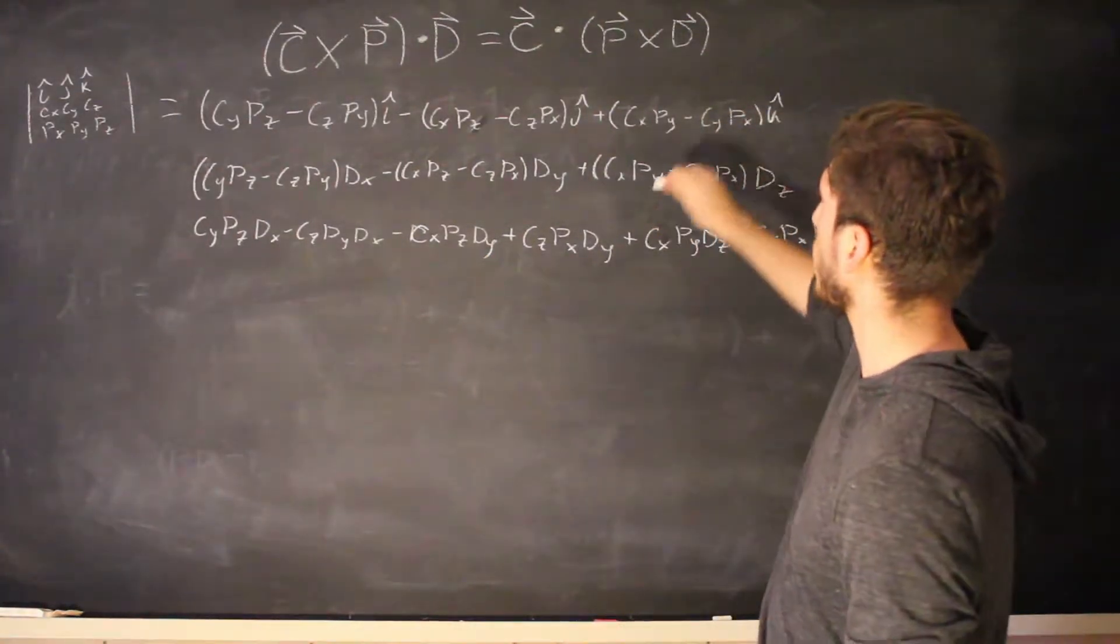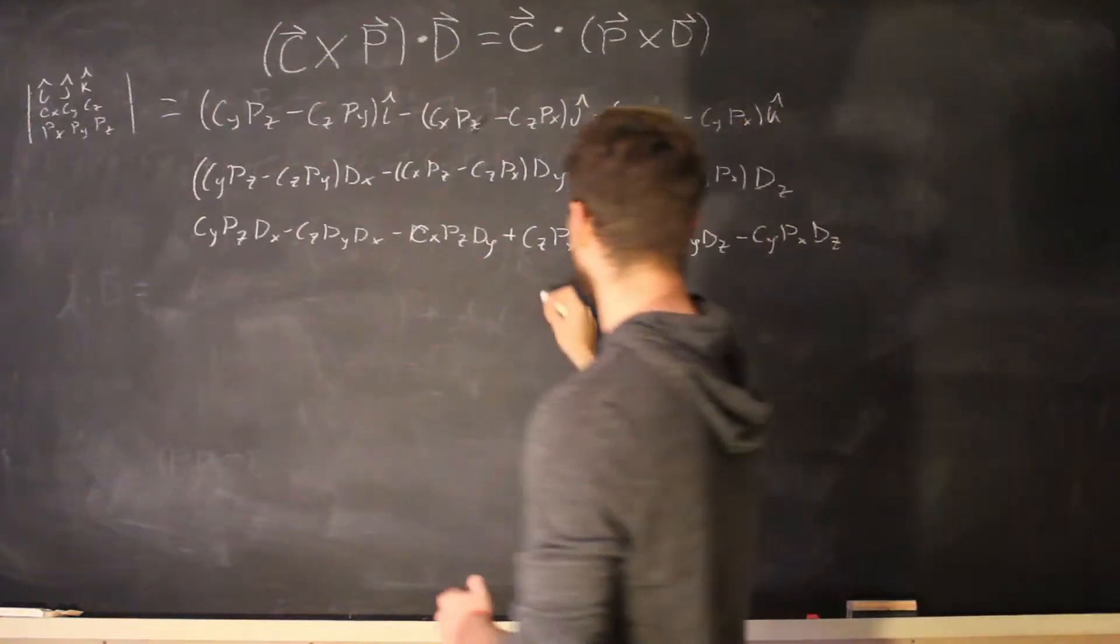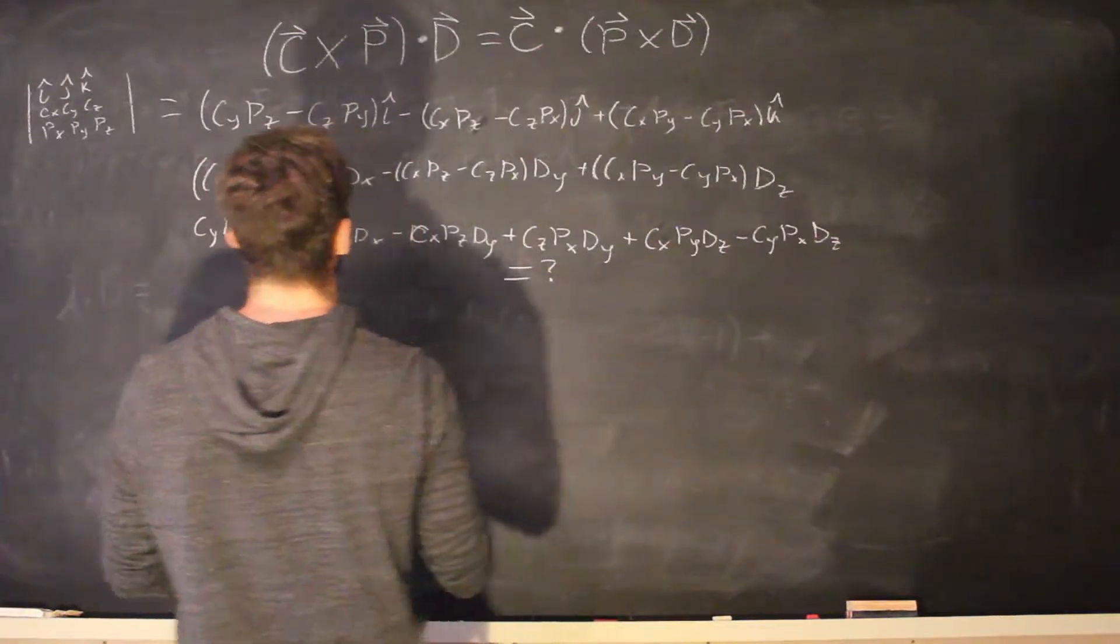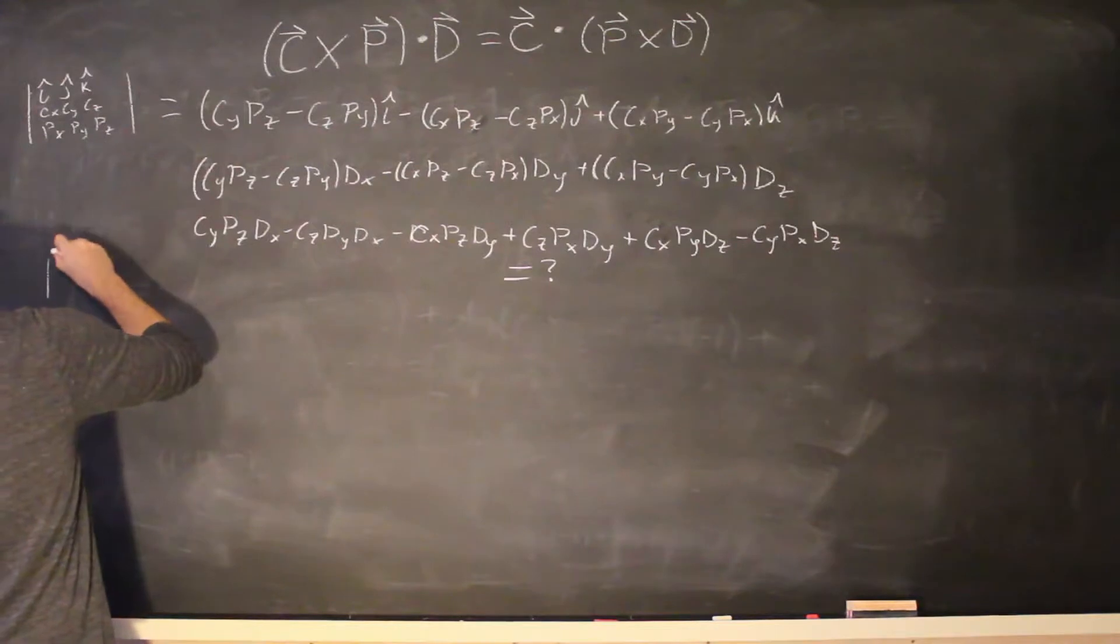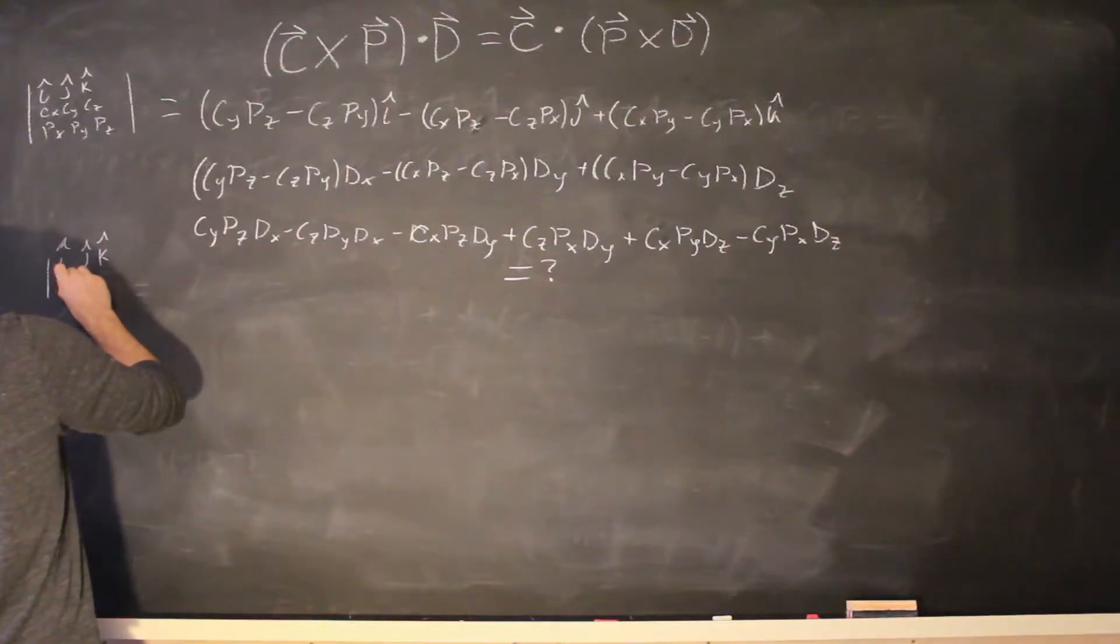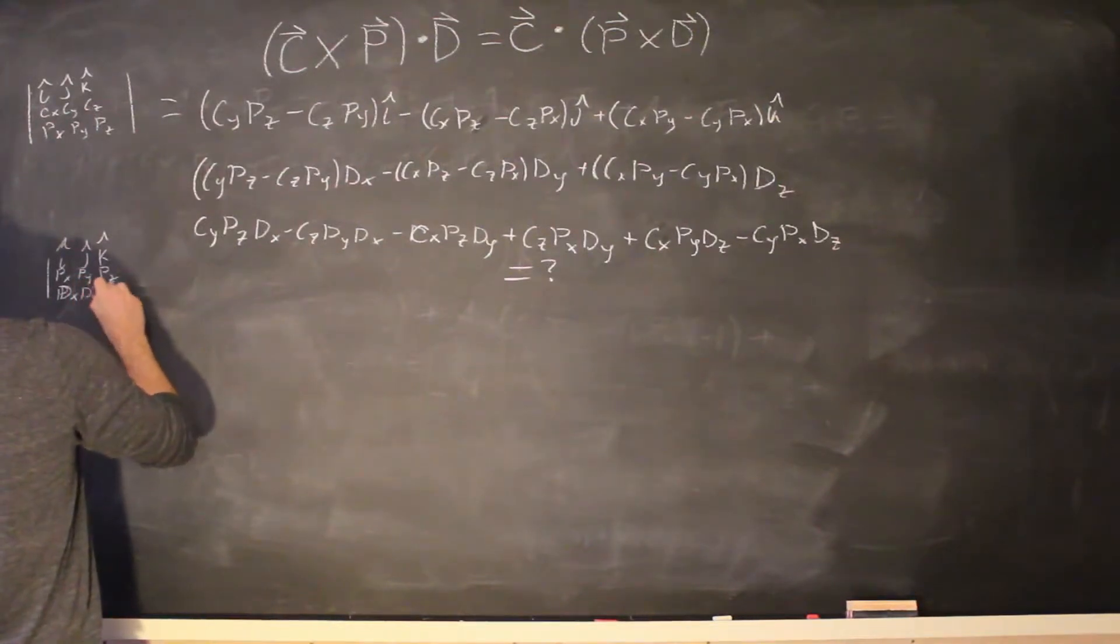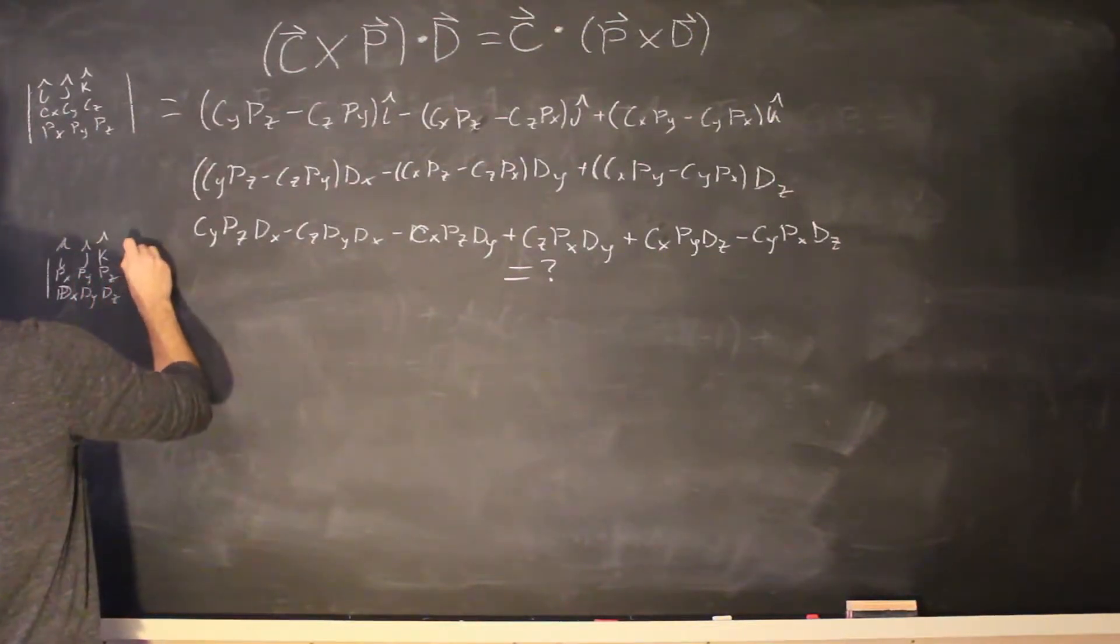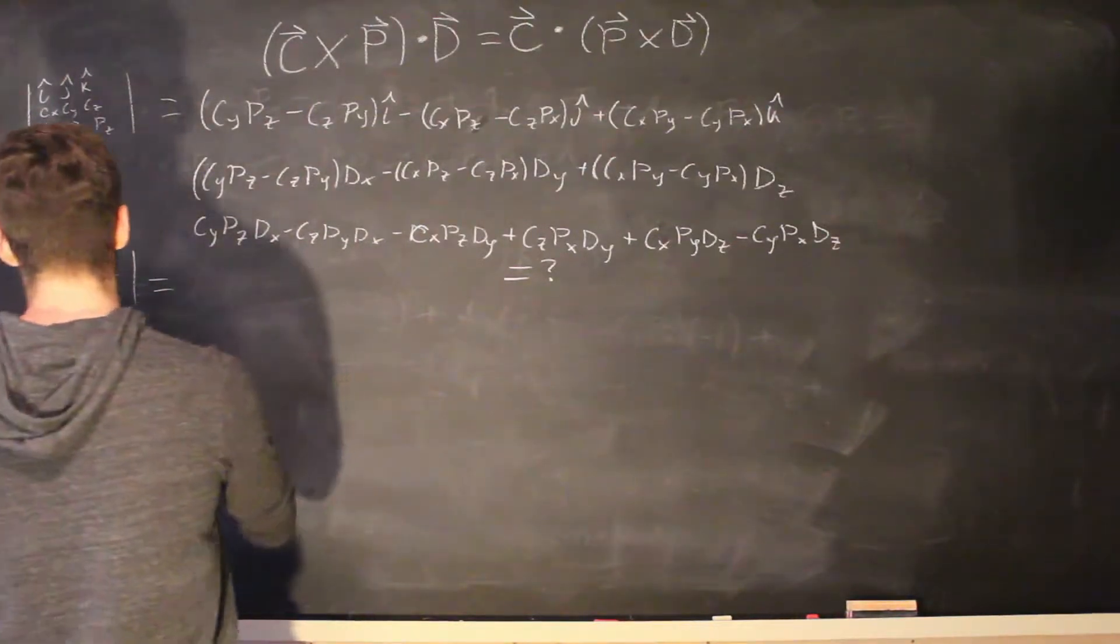and we want this to equal to c dot p cross d right so let's do question mark. okay so new matrix I mean it's going to be the same thing but just in case I get messed up or something because this is actually my second time around because last time I lost track of all of my letters